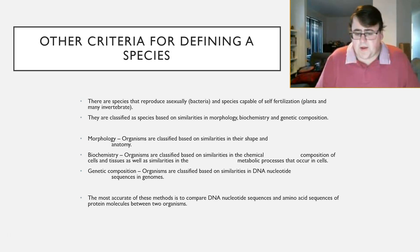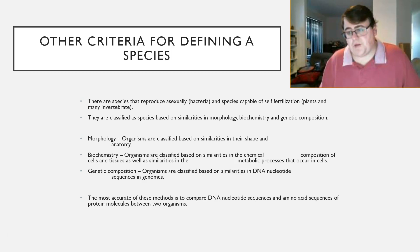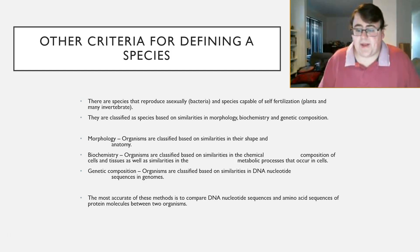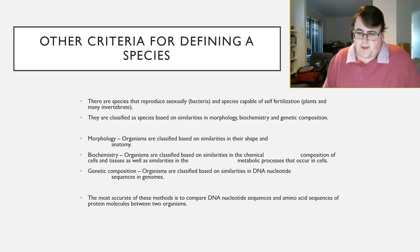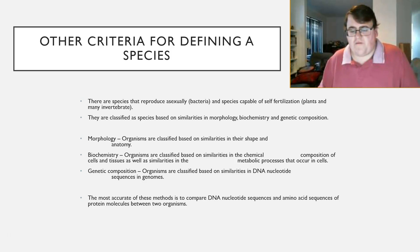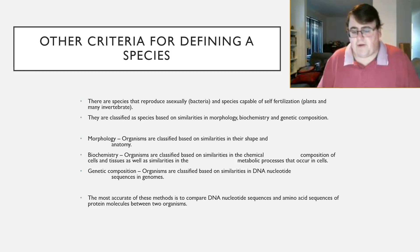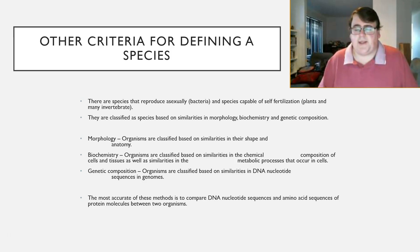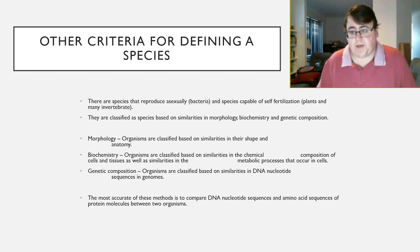Genetic composition is another method, where we classify species based on the similarities in their DNA nucleotide sequence. We do that by sequencing the entire genome and finding similarities and differences — if there are lots of similarities, they're probably closely related and possibly the same species. Out of all those ways, the most accurate is comparing DNA nucleotide sequences as well as the amino acid sequences of protein molecules between two different organisms.